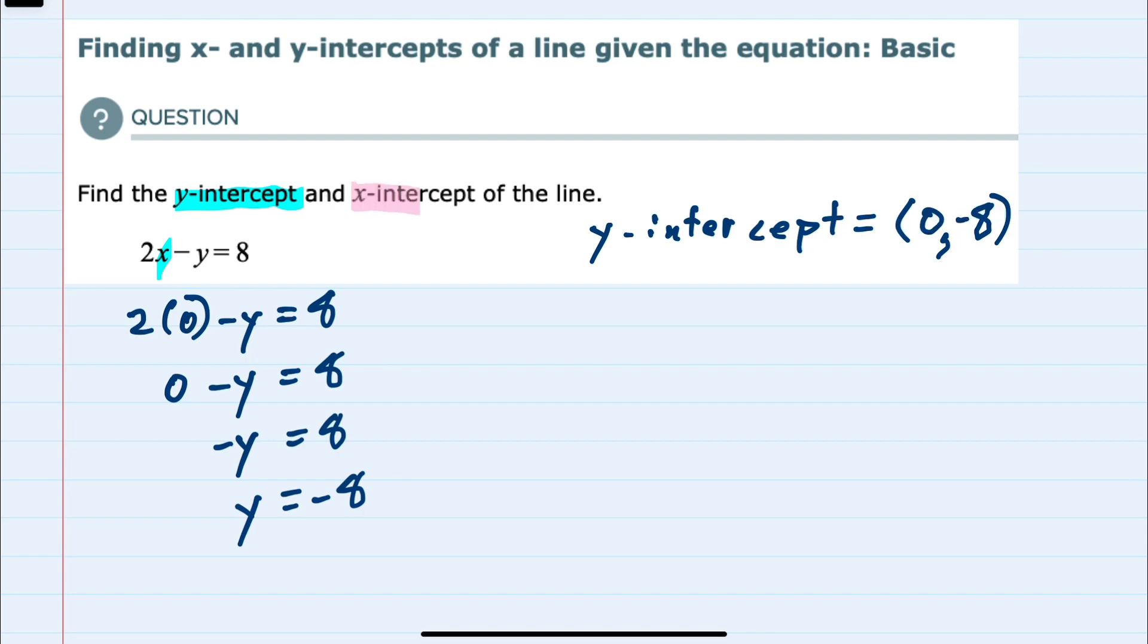And then to find the x-intercept, we know that where a line crosses the x-axis, that point would have a y value of 0.